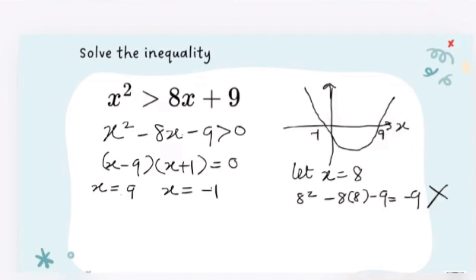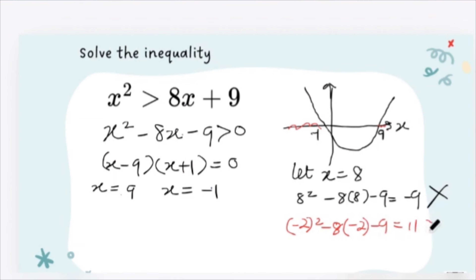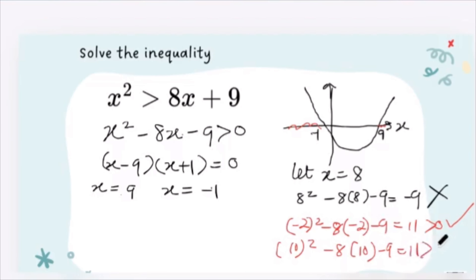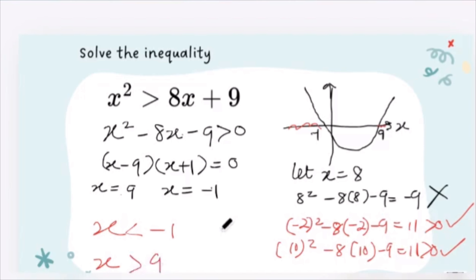Since the inside failed, we check outside the interval. Taking x equals negative two: (-2)² minus 8 times (-2) minus 9 equals 11, which is greater than zero — check. On the other side, taking x equals 10: 10² minus 8 times 10 minus 9 also equals 11, greater than zero. Because the interval didn't work, the answer is x < -1 or x > 9.